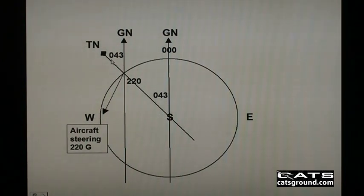Measuring round now from the True North reference, 043 plus 220 degrees will make a True North steering for the aircraft of 263 degrees.